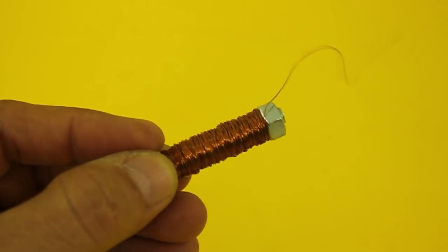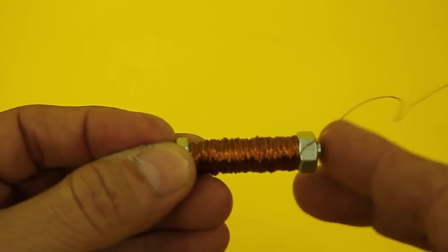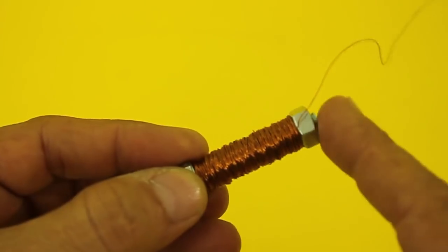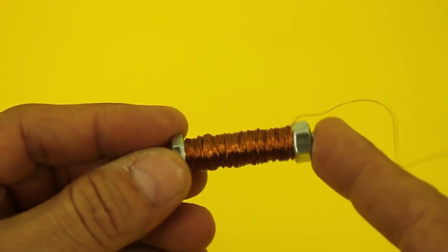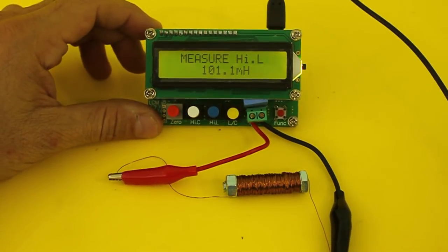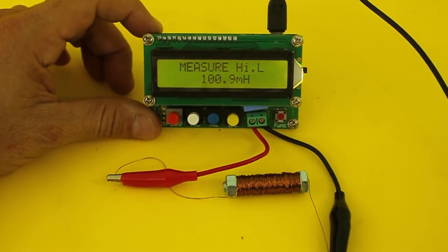This is the inductor that I will use. It is simply a bolt and nut with around 600 turns of magnet wire size 30 AWG. It has around 100 mH of inductance.